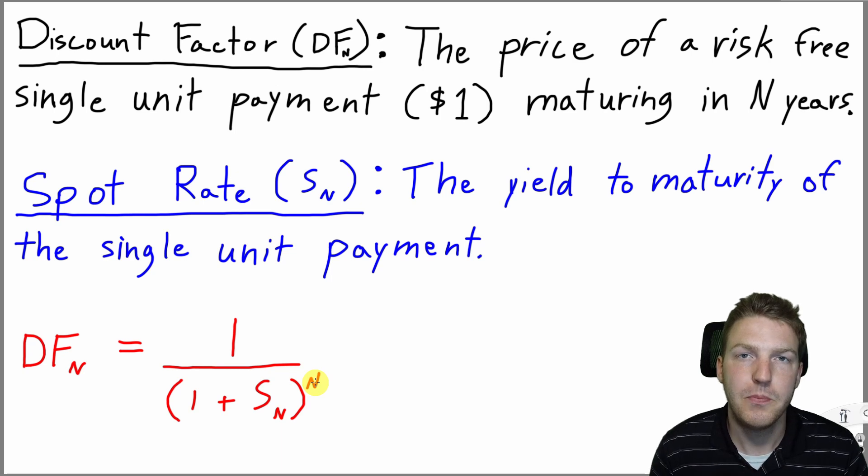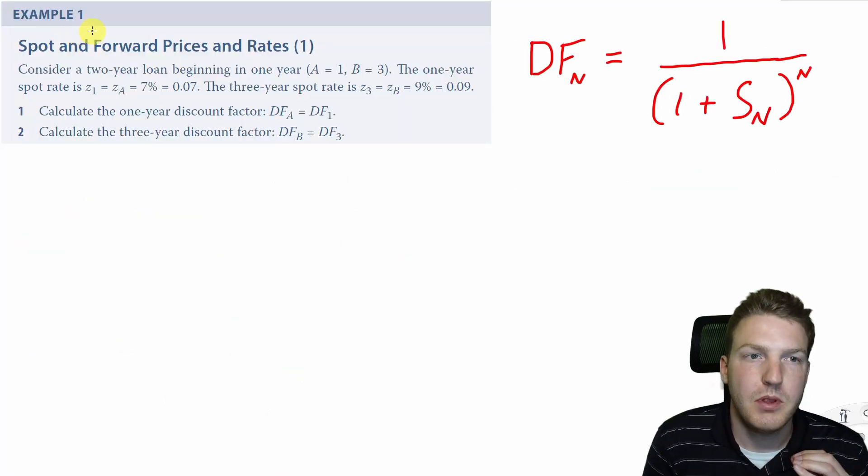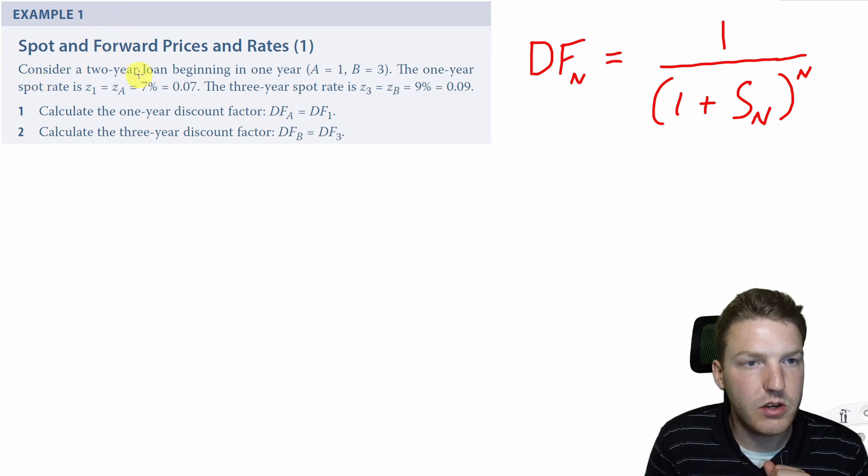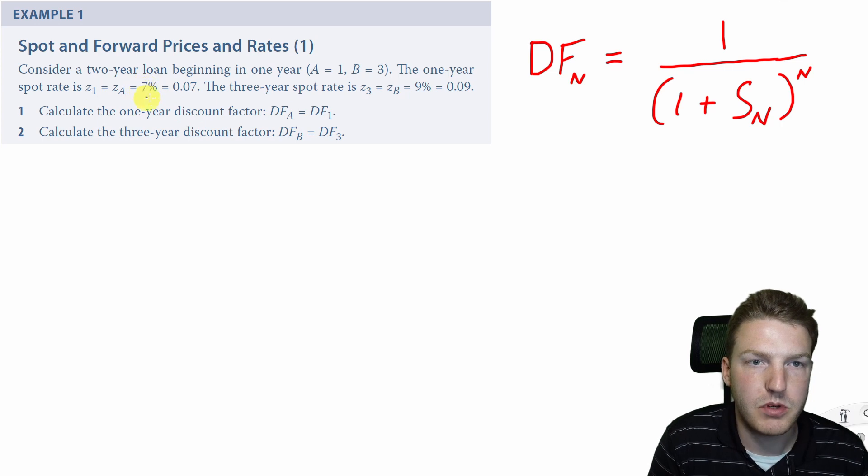Now let's take a look at an example. Let's work the first example of the chapter to really nail home these ideas. Consider a 2-year loan beginning in 1 year. The 1-year spot rate is 7%. The 3-year spot rate is 9%. First, calculate the 1-year discount factor.